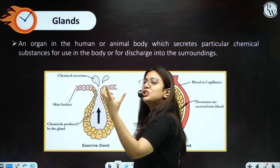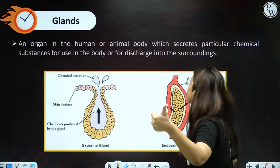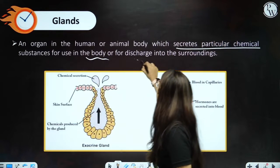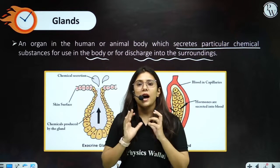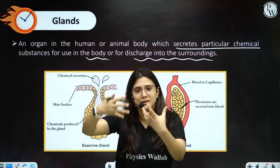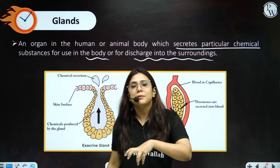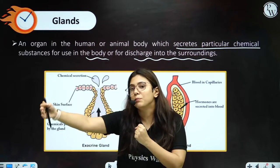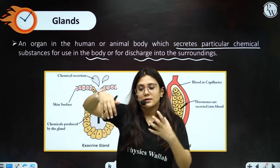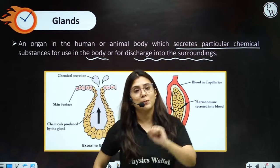A gland can be an organ or just a collection of some tissues — an organ in the human or animal body which secretes particular chemical substances, producing something in the body and discharging it into the surroundings. Whatever substance is being produced, it will either stay around the gland or it can travel somewhere — transported with the help of blood. Blood is responsible for transporting things in us. So glands produce substances that either stay around or move from that place to another place in the body.